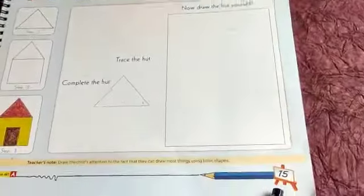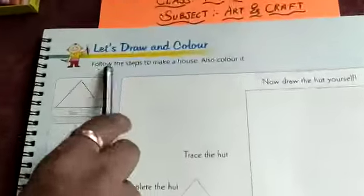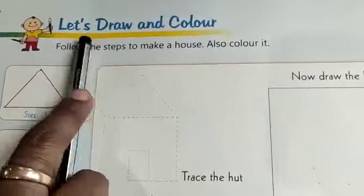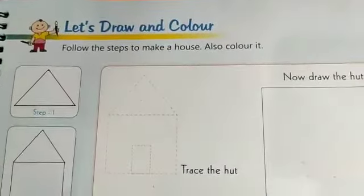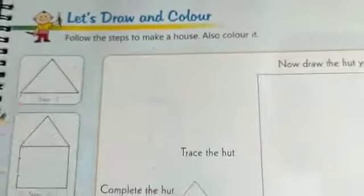Take your art and craft book children. Now open page number 15. Here we have a new activity that is let's draw and color. Follow the steps to make a house also color it.